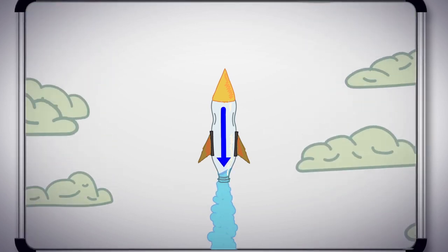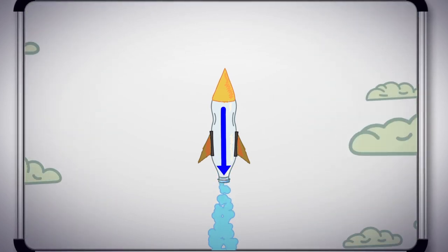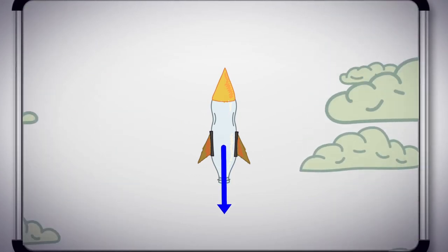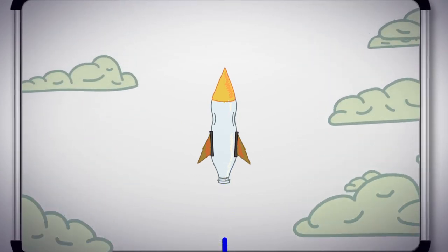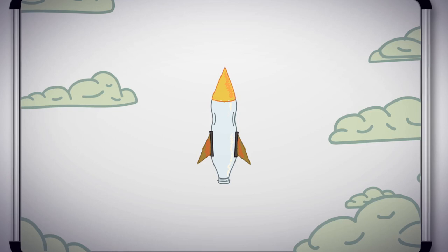It's the water that gives us our thrust, so the water is very important. Once all the water is gone, the air escapes and the bottle returns to normal air pressure. But by that time, it's high in the sky.